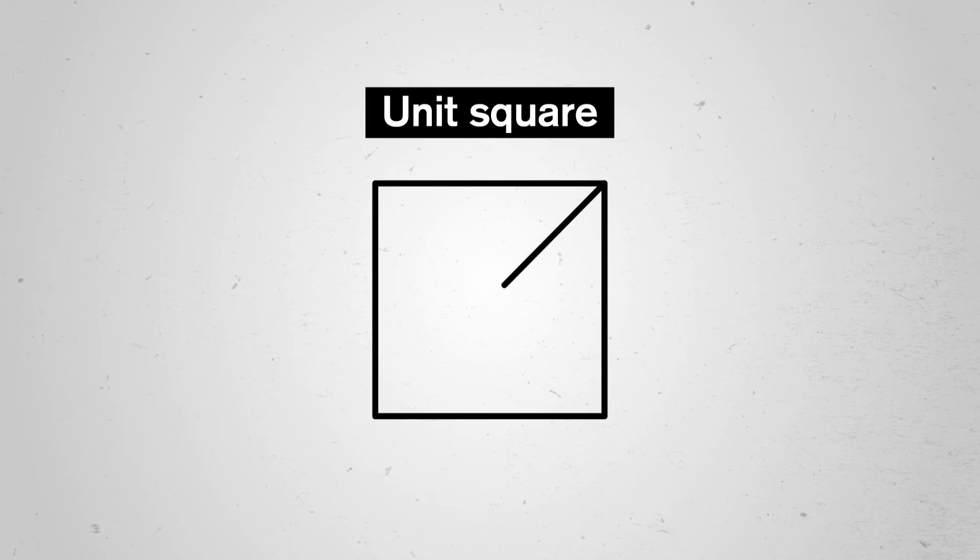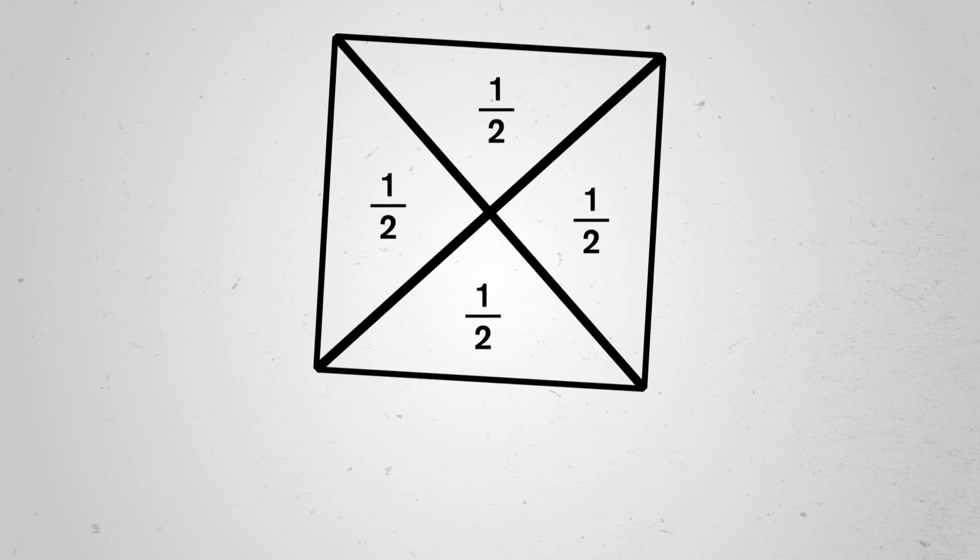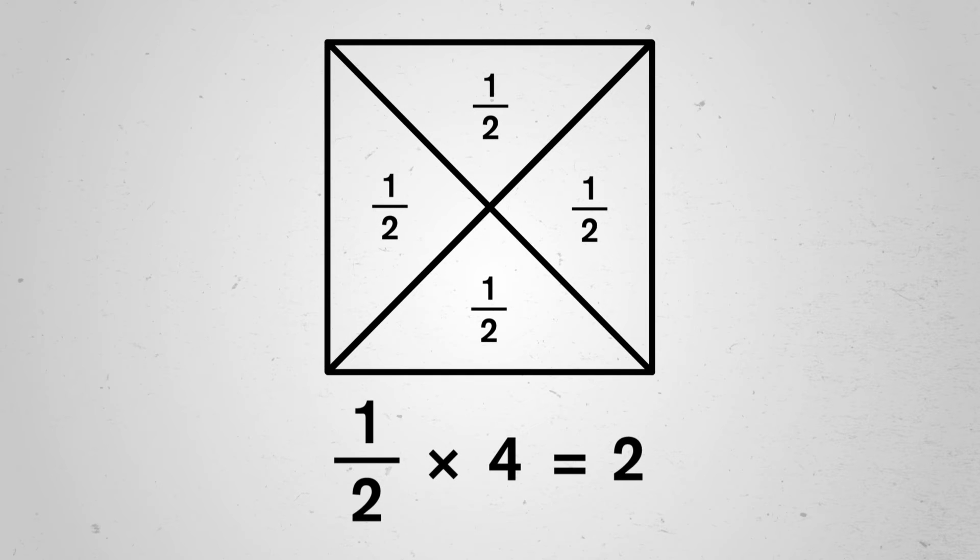If we cut the square with area 1, called the unit square, in half diagonally, we get two triangles each with area 1 half. Then if we use that diagonal to create a new square, its area will be 4 times a half, which is 2. So we know that a square with area 2 actually exists. It's right there in front of us. The square root of 2 must also exist. Maybe we just didn't go far enough. Or the decimal expansion of the square root of 2 really goes on forever.